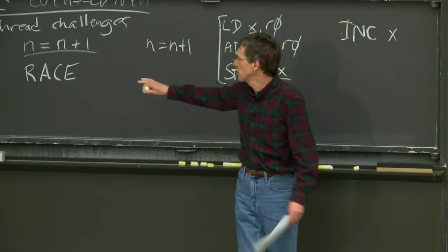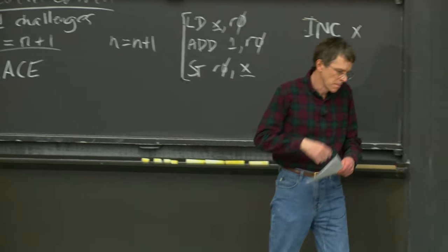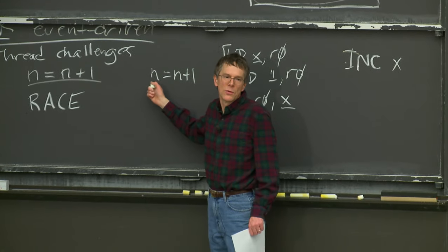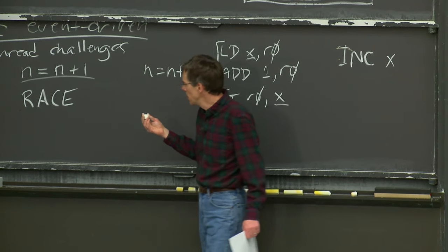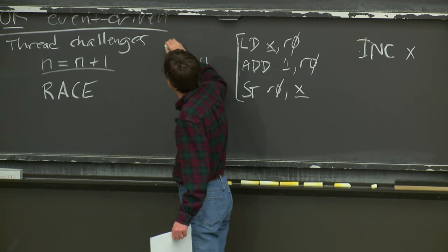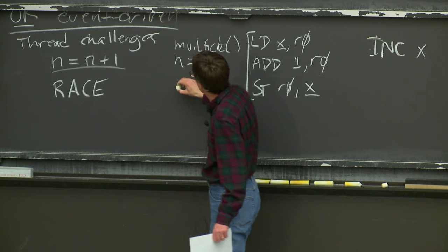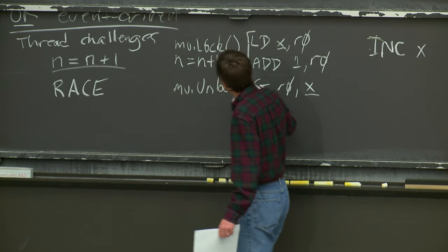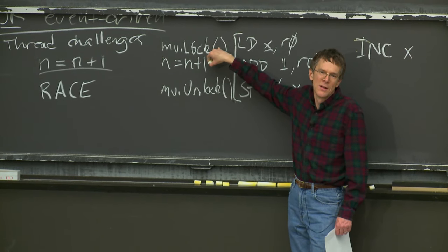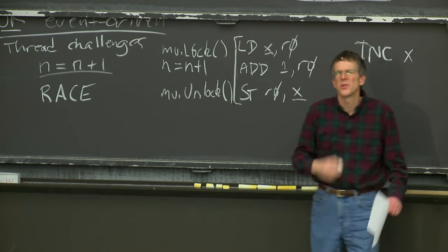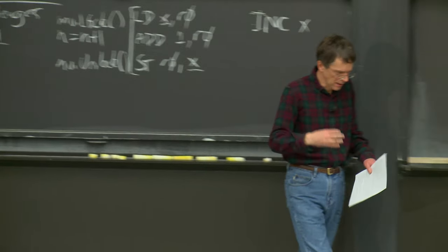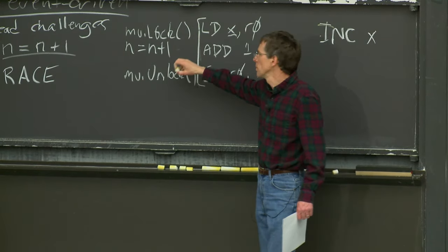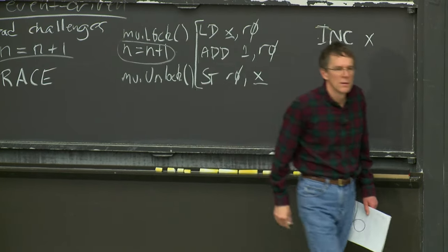The way you solve this is by inserting locks. As a programmer, you have some strategy in mind for locking the data. You say this piece of shared data can only be used when such-and-such lock is held. Go calls locks mutexes. You'll see mu.Lock before a sequence of code that uses shared data, and mu.Unlock afterwards. Whichever thread gets the lock first gets to do all its operations and finish before the other one proceeds. You can think of wrapping code in a lock as making a multi-step sequence atomic.